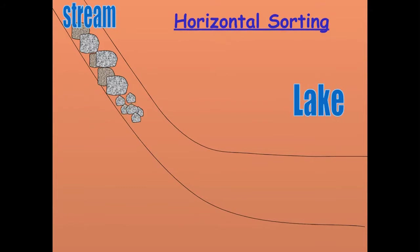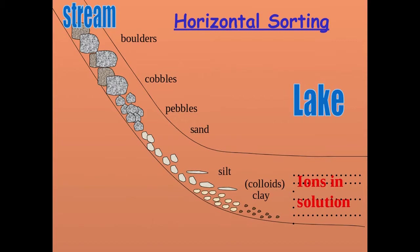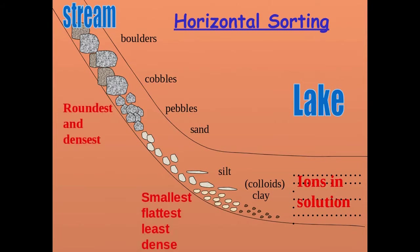Through digital animation, we show how the different particles deposit — the larger particles get deposited first. The particle types from largest to smallest are: boulders, cobbles, pebbles, sand, silt, clay, colloids, and ions in solution.